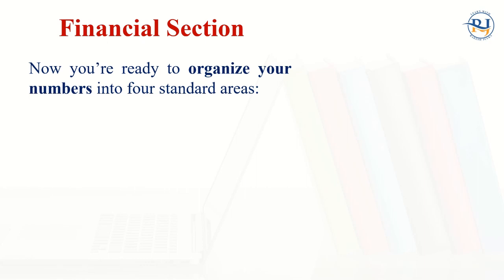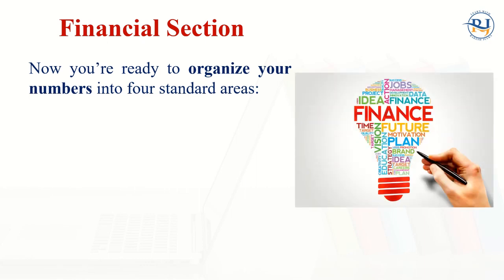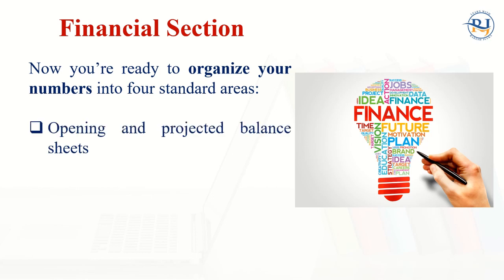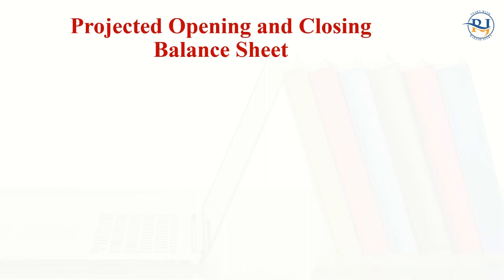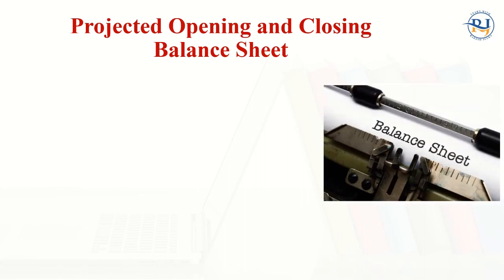Now, come to the financial section. You are ready to organize your numbers into four standard areas: the first one is the opening and projected balance sheet, second is cash flow projection, next one is income statement, and the fourth one is supporting financial information and financial analysis. I will explain each one by one.